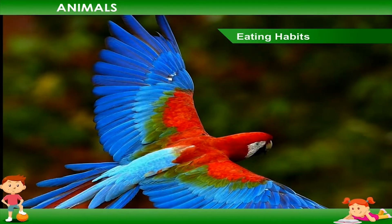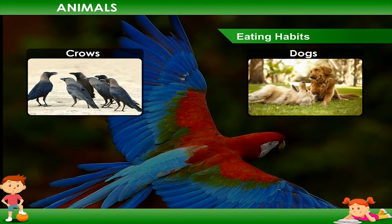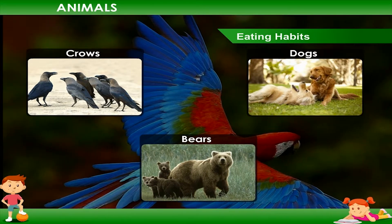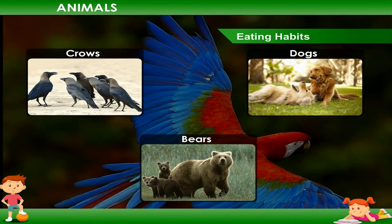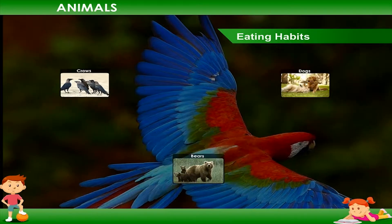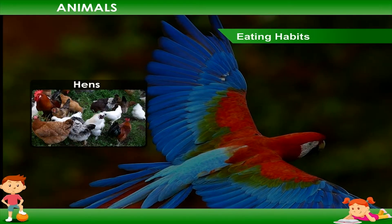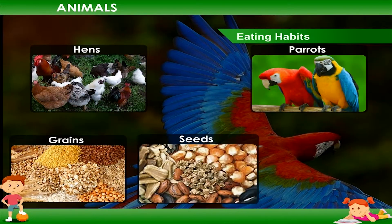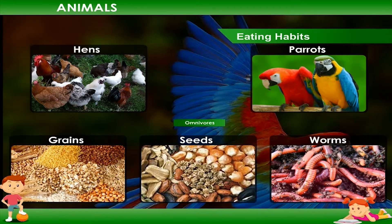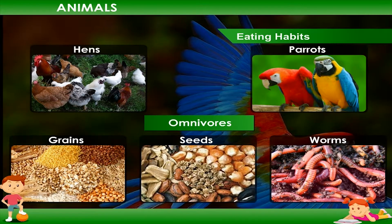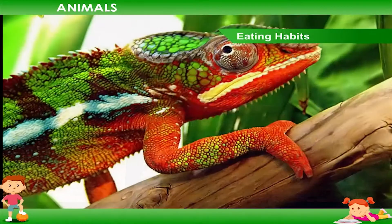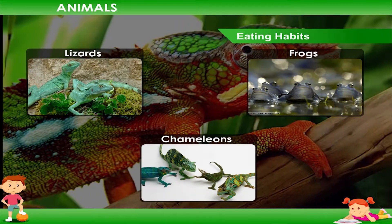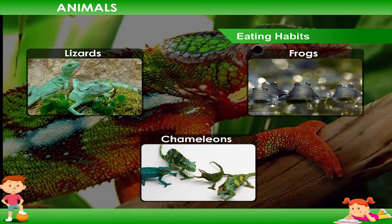Some animals such as crows, dogs, bears etc. eat both plants and flesh of other animals. Birds such as hens and parrots eat grains, seeds and worms. These are called omnivores. Animals such as lizards, frogs, chameleons etc. eat insects.